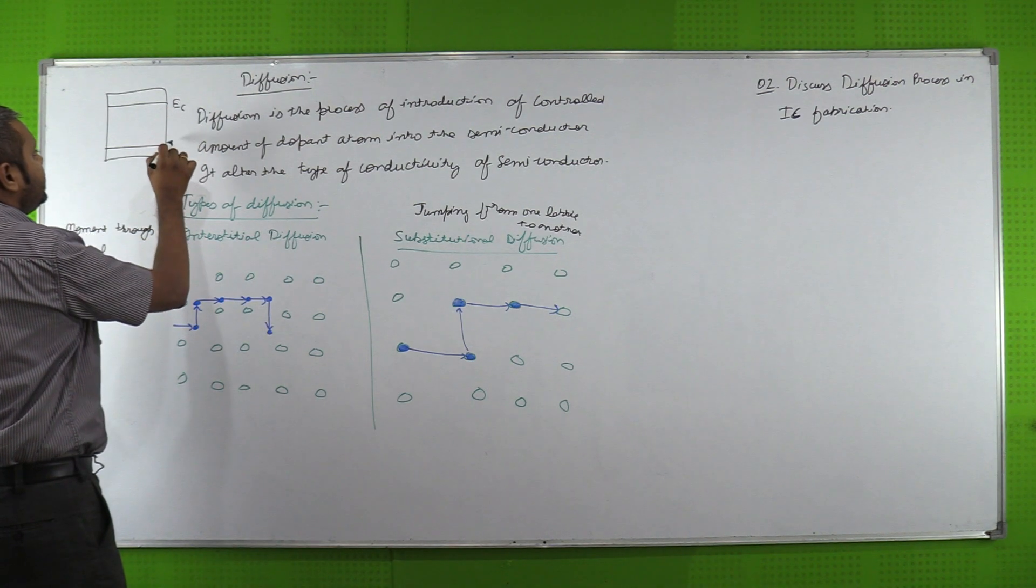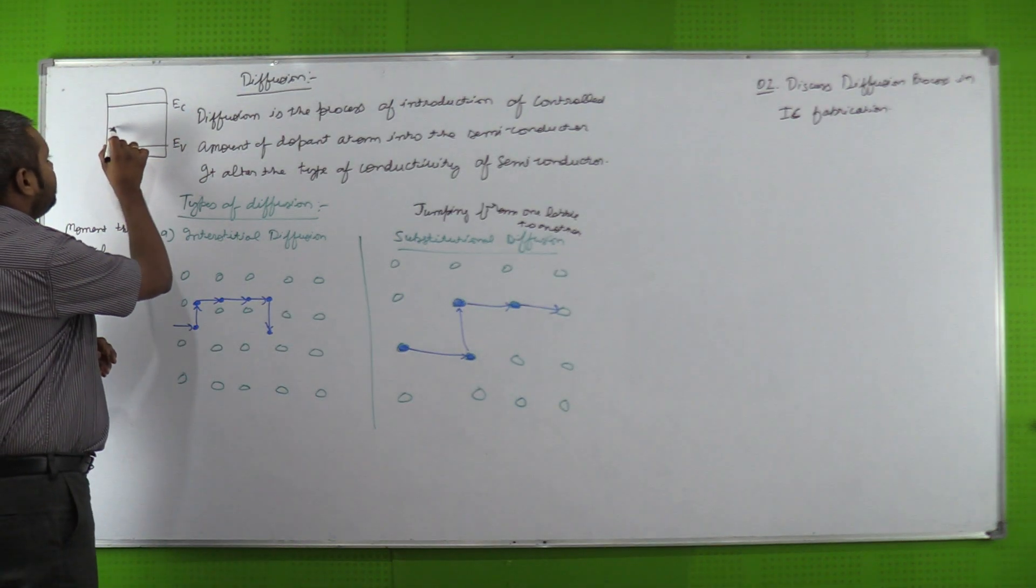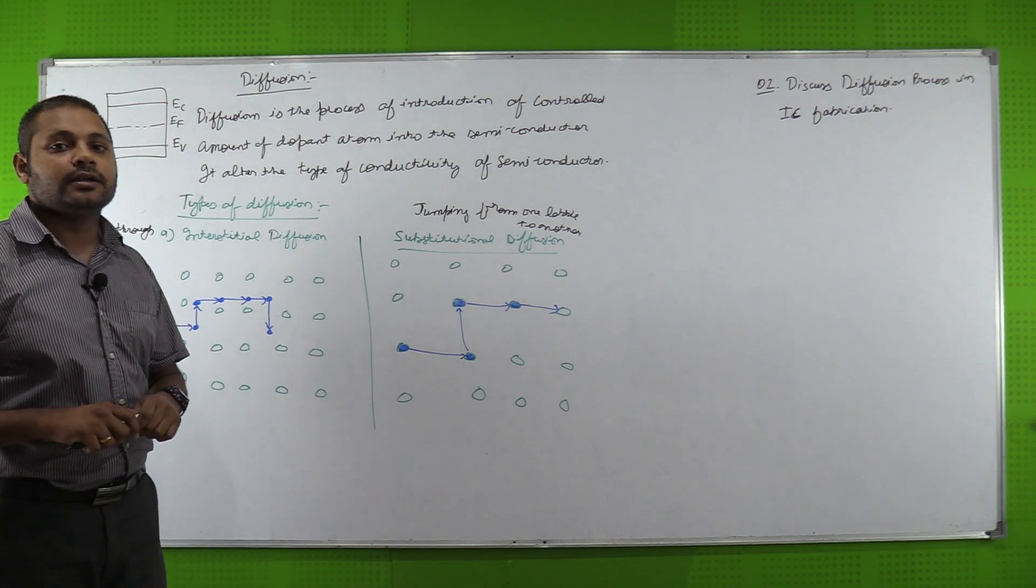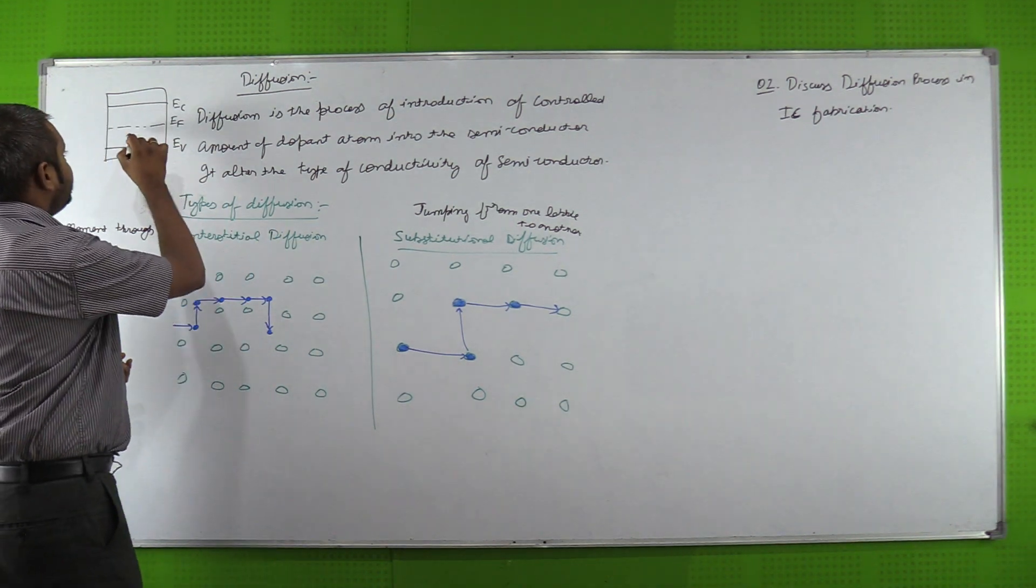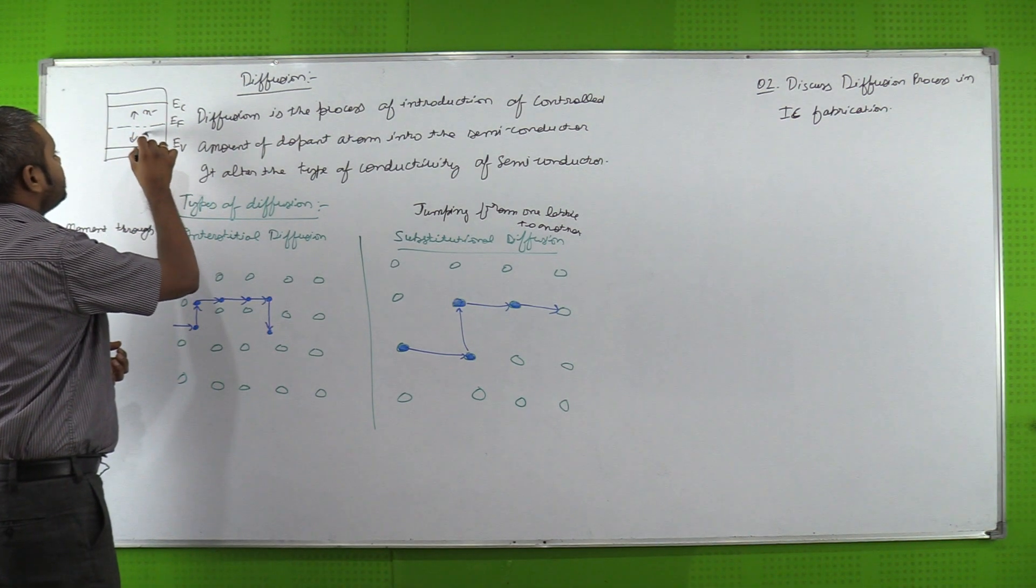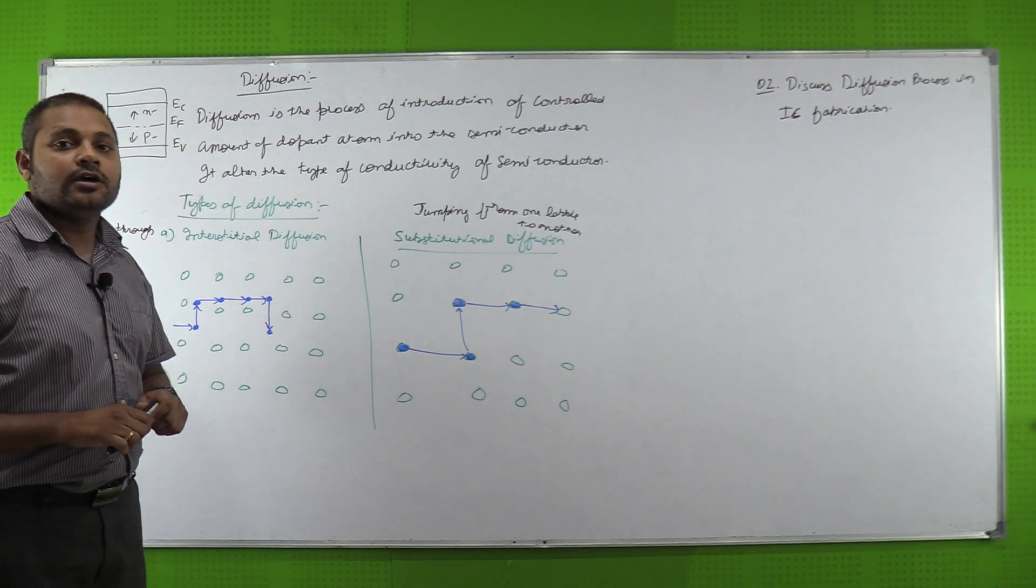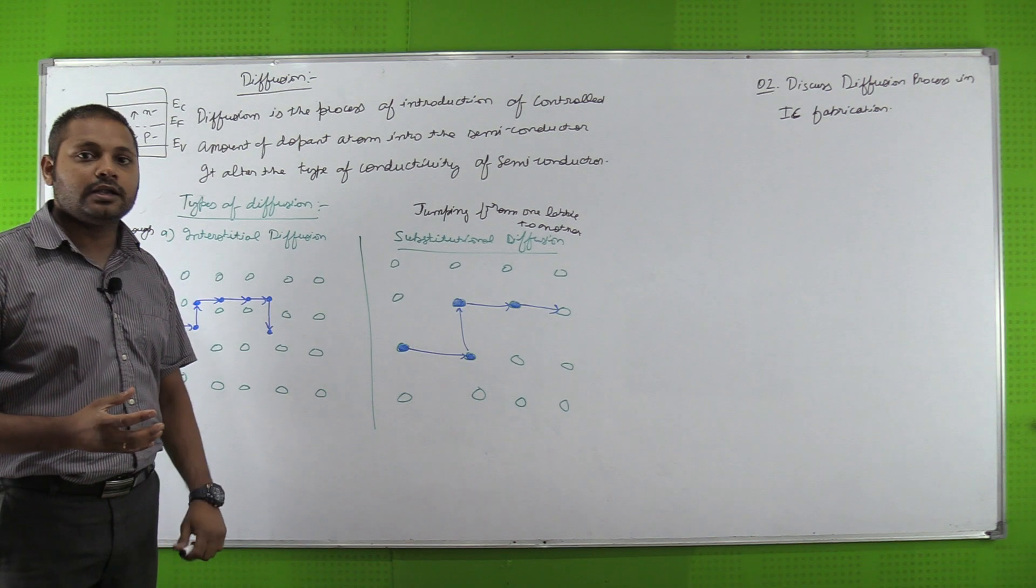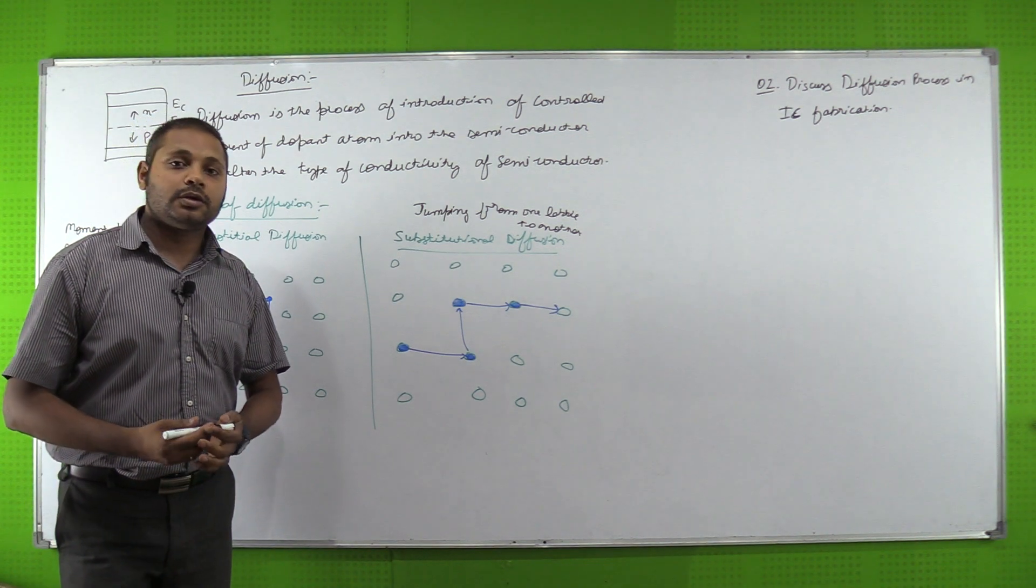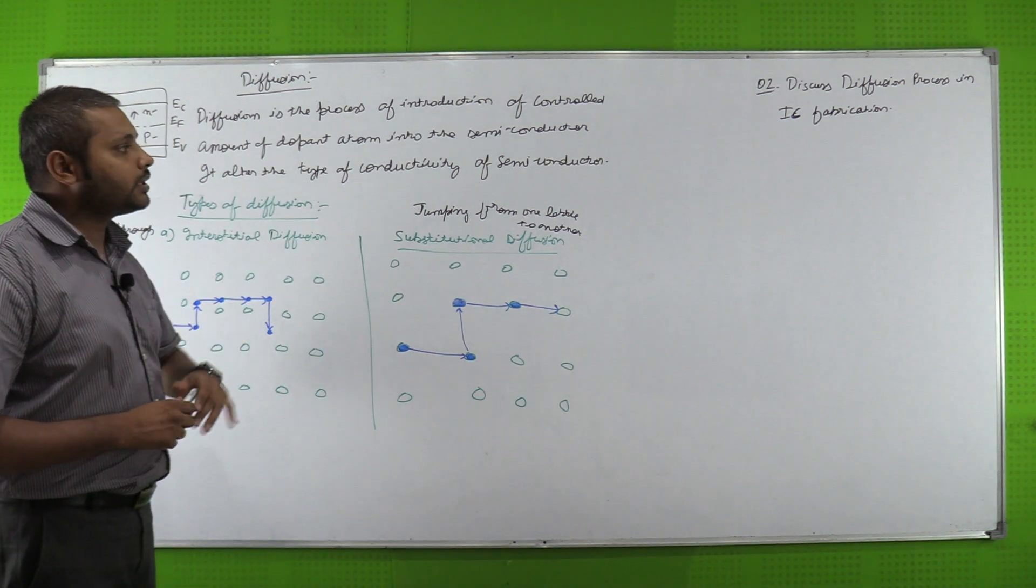When we are looking at the energy band, so my conduction energy band and valence energy band, in the center is my fermi level. What kind of diagram is this? This is intrinsic semiconductor. But when we have dopant added in it, it gets shifted toward downward or maybe upward. Upward in which case? In n-type semiconductor case, and downward in p-type semiconductor case. So in n-type semiconductor when it shifts, my fermi energy level, it means its conductivity increases. Conductivity is very much enhanced when we add more dopant. What will happen? Its conductivity will increase. So here it alters the type of conductivity of semiconductor.